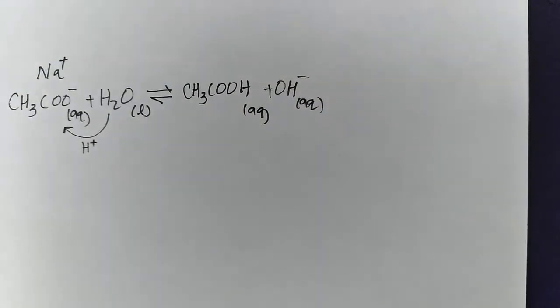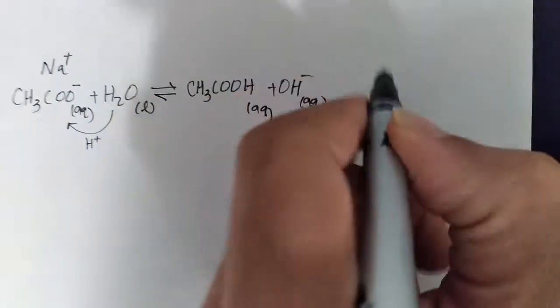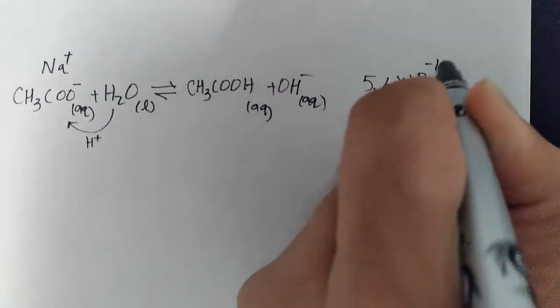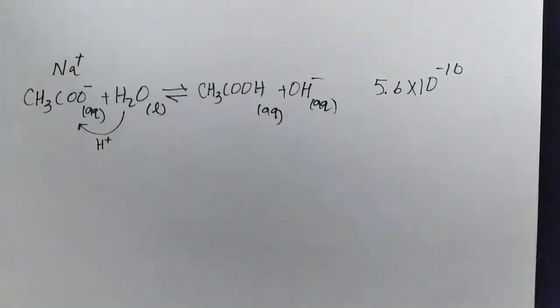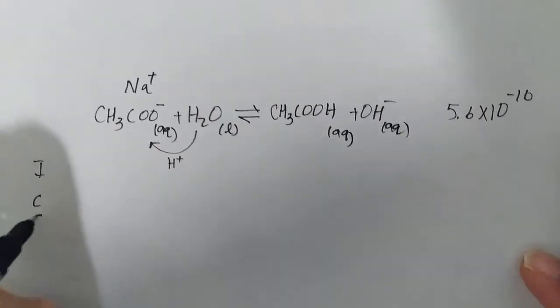10 to the minus 10 is a really small number, and we do not have to use the quadratic. We can use our assumption because this is such a magnificently small number. 0.36 is our initial concentration.